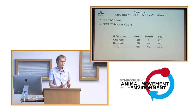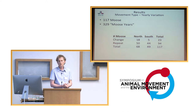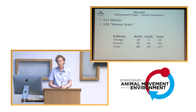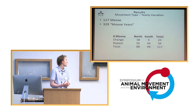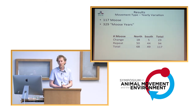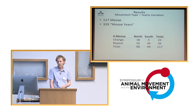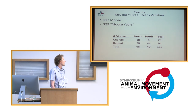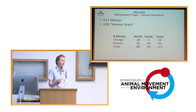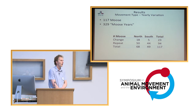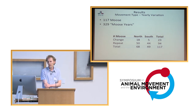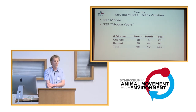Moose do switch from migratory to sedentary and then perhaps back again. For this analysis we needed moose with at least a couple of years of data — 117 moose and 330 moose years, so nearly three years per moose; 68 in the north, 49 in the south. Nearly 25% of moose in the north switched strategy from migratory to sedentary or vice versa, whereas in the south this was lower at about 10%.